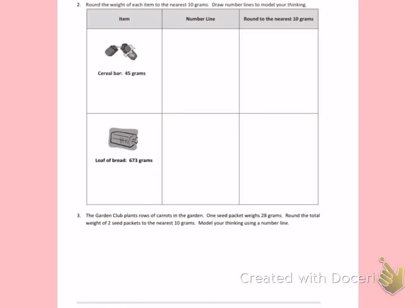This is lesson 13, homework, page 2. Today's objective was to round 2 and 3 digit numbers to the nearest 10 on a vertical number line.